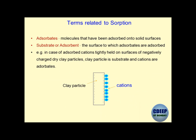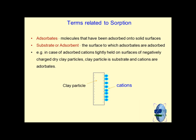There are a few terms used when discussing sorption. The first is adsorbate — molecules that have been adsorbed onto solid surfaces; any sort of contaminant is adsorbate. Adsorbent: if a fluid is present carrying contamination, that contamination is known as adsorbate or substrate. Most of the time, sand and clay particles are going to be substrates — surfaces on which adsorption occurs.